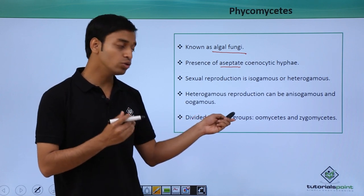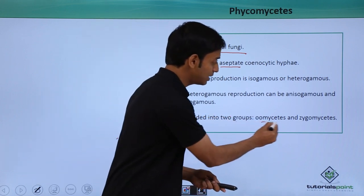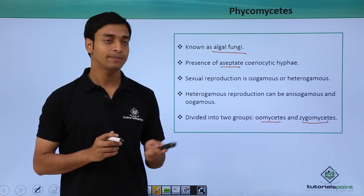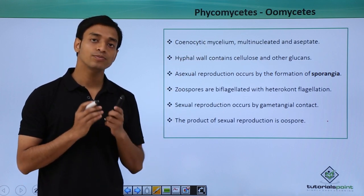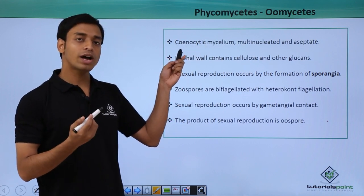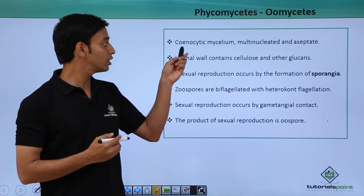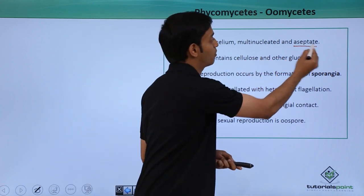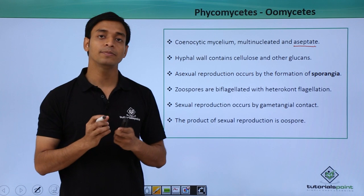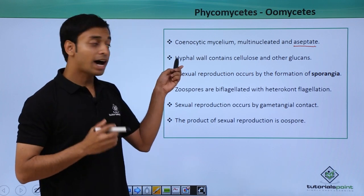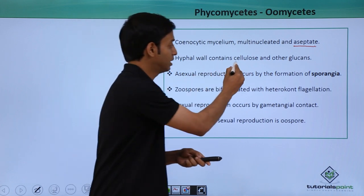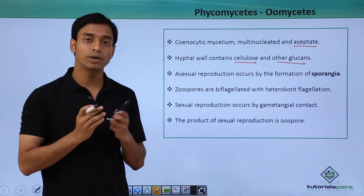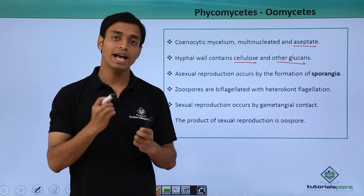This group is divided into two main groups: first, the oomycetes, and the zygomycetes. Let us first talk about the oomycetes. They have cenocytic mycelium — they are multinucleated as well as aseptate, meaning their protoplasm is not separated by septa. The hyphal wall contains cellulose and also some basic types of glucans.